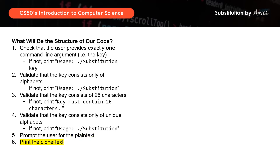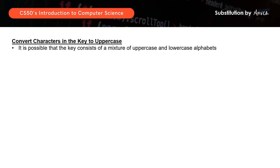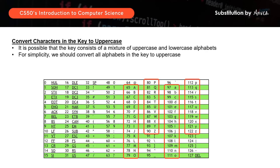Before we print the ciphertext, it's important to remember that the key may consist of a mixture of uppercase or lowercase alphabets. To make the key easier to work with, we can convert all characters in the key to uppercase. This is done by running through every character of the key, and if the character is lowercase, we convert it to uppercase using the ASCII chart. Lowercase h is 104 and uppercase H is 72, so we just subtract 32. With that, the key now consists entirely of uppercase alphabets, which is easier to work with.